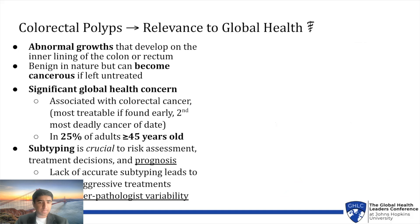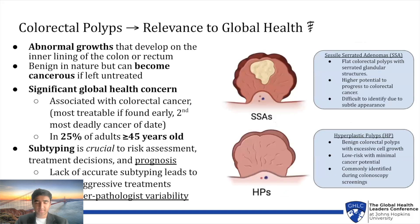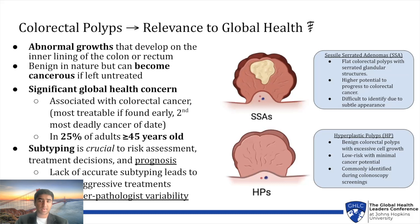I specifically focused on two subtypes: sessile serrated adenomas and hyperplastic polyps. SSAs are flat polyps with serrated glandular structures that are more likely to progress to cancer but very difficult to identify, while hyperplastic polyps are benign polyps with excessive cell growth and minimal cancer potential, usually detected during colonoscopy screenings.